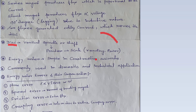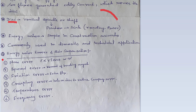Energy meter: simple in construction, accurate, commonly used in domestic and industrial applications. Basically energy meter mein bhoat tarike ka error dekha jata hai, jaise ki phase error, speed error, friction error, creeping error, temperature error, and frequency error.